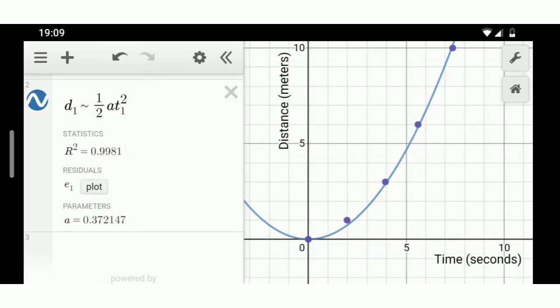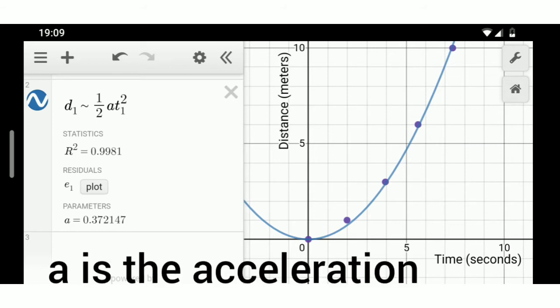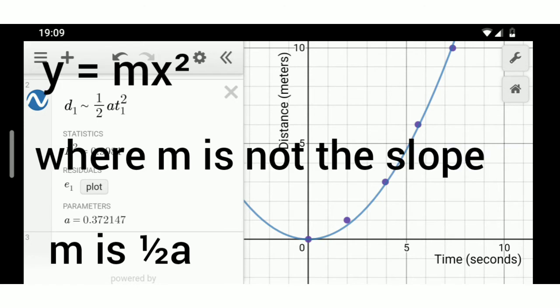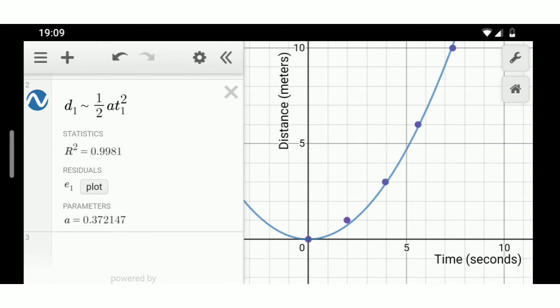The analysis is that the distance is approximately equal to one half the acceleration times the time squared. Remember, d1 is the distance, t1 is the time. Notice that t1 is squared. This is a quadratic equation of the form y equals mx squared, where the x is the time t1 and the y is the distance d1.